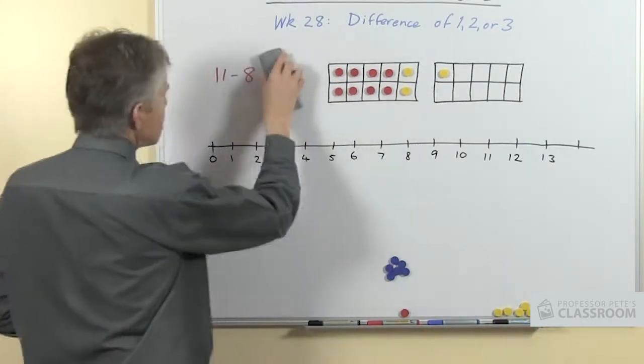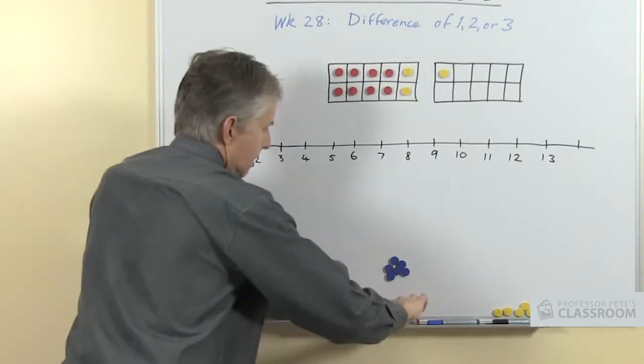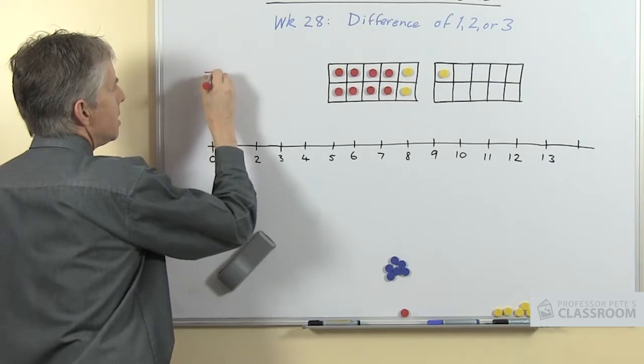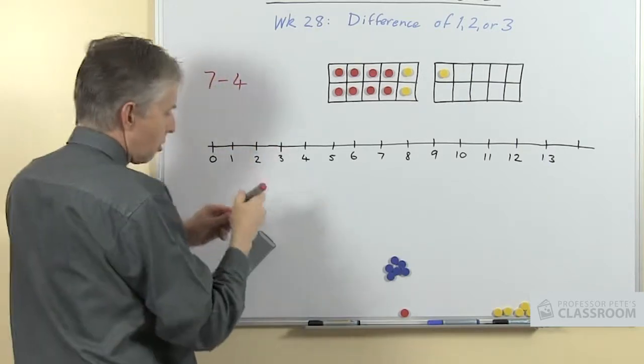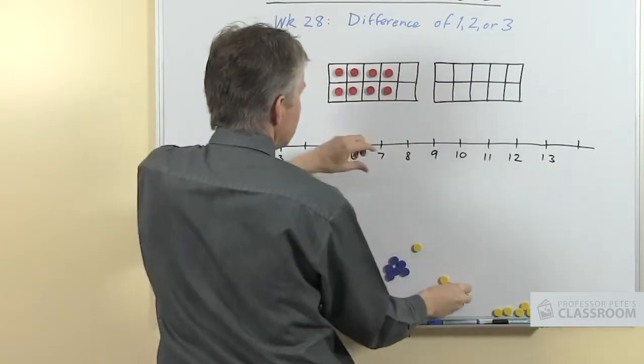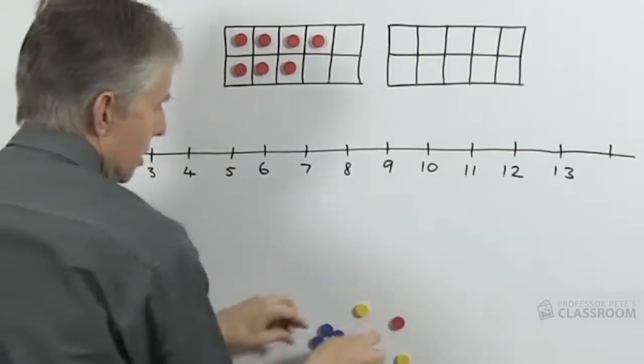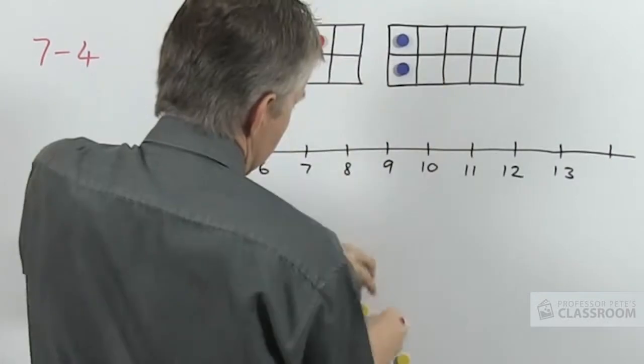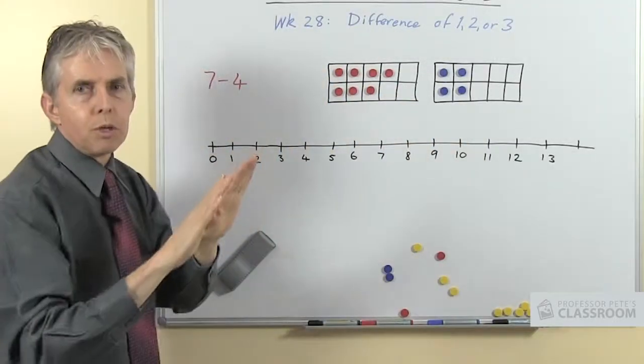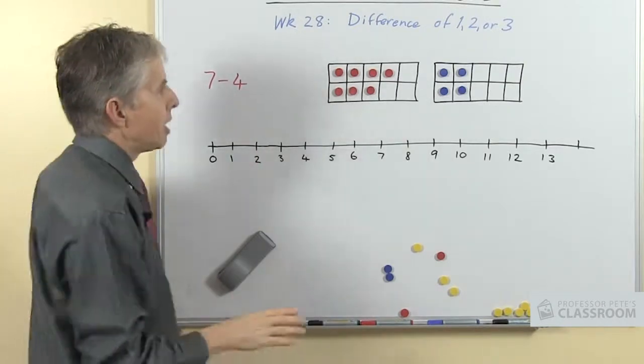Another way to do this, I'll change the question so that I can show it with the two 10 frames. Let's say 7 minus 4, we're comparing the 7 and the 4. So we'll have 7 on this 10 frame and 4 on this one, and you might prefer to put them next to each other. This might be clearer that way.